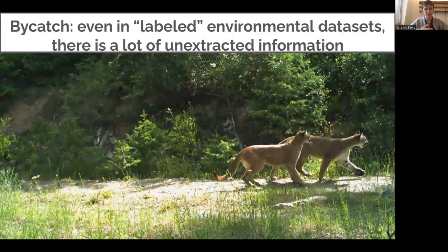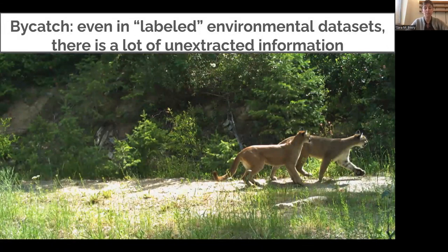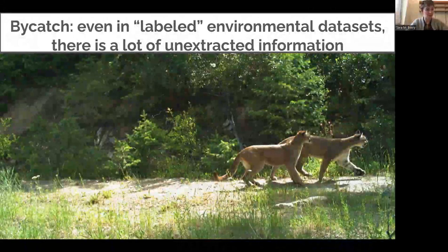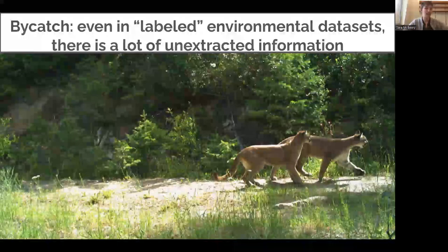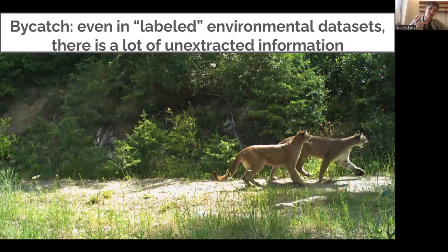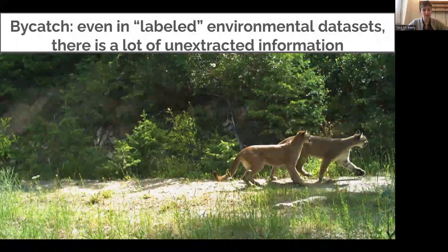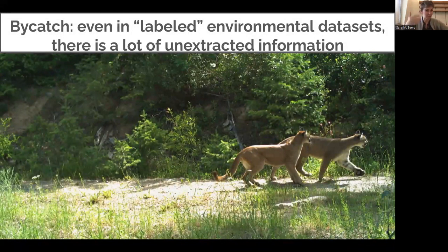We might call it data bycatch or environmental bycatch — information that exists in the data but we can't train machine learning models to extract because we have no labels for it. For example, the fact that there are two mountain lions in an image, that they are juvenile, probably siblings, and looking at all the different plant species in the background of camera trap images and understanding longitudinally how those plants interact with environmental covariates. There's a lot of information we can't currently capture and can barely even dream to label, because we can barely label the first-order information in the data we have.